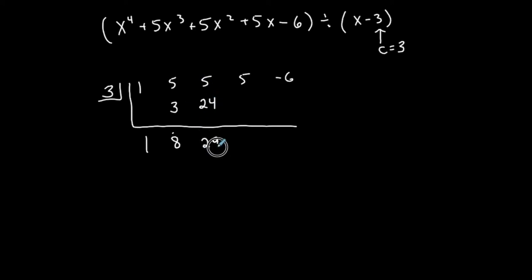Again, anything under the line gets multiplied by 3. 29 times 3 is 87 underneath the next number. Anything here gets added vertically. 5 plus 87 is 92. Goes under here. Anything under this line gets multiplied by the 3. 92 times 3 is 276. Anything here gets added. 276 plus negative 6 is 270. I keep going until I get all the way to the end.